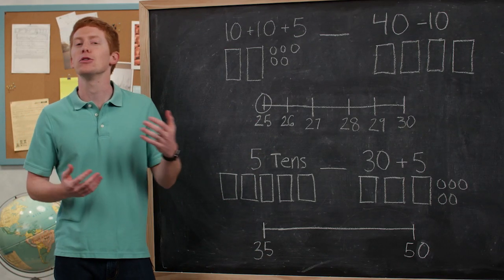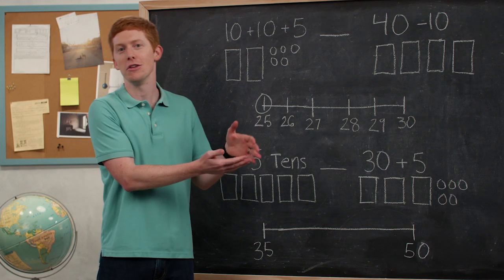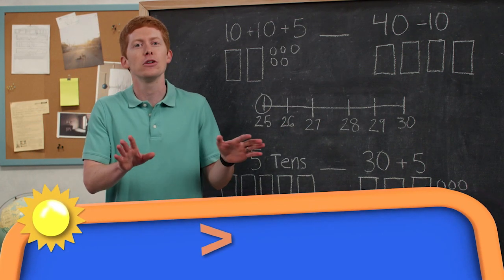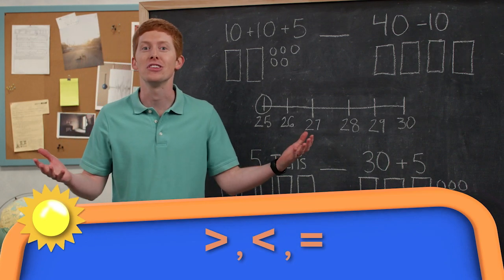And we can think about, when we're comparing numbers, we can think about the symbols that we might use. We might say, hey, one number is greater than another number or it's less than. And how can we show that? Remember those symbols greater than, less than? What about equal to? What if they're the same?